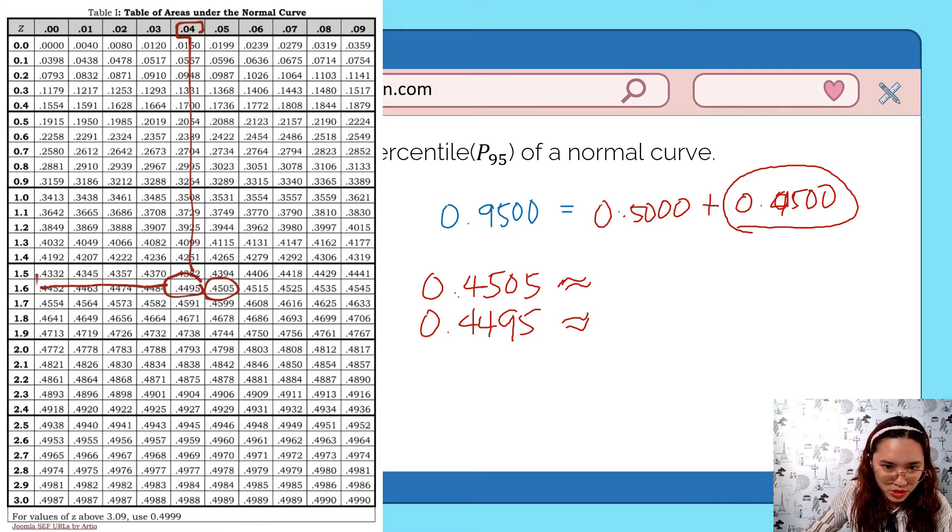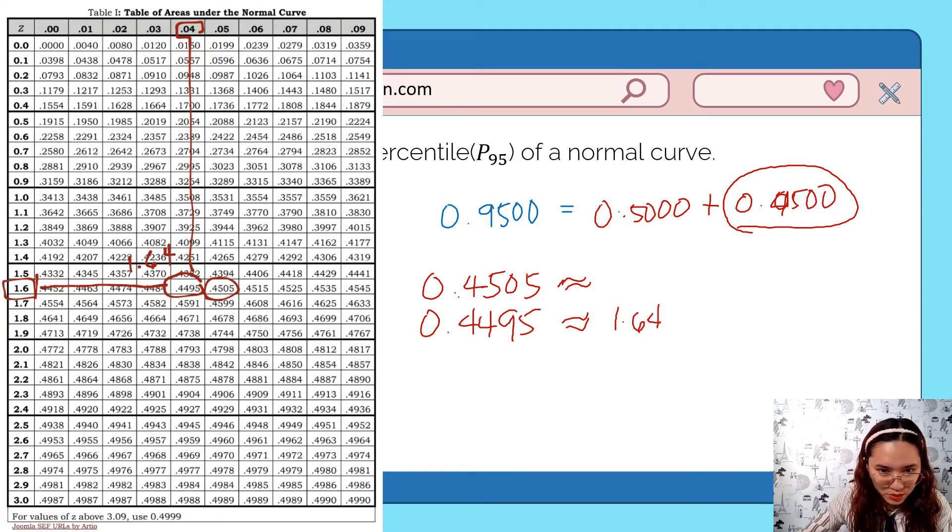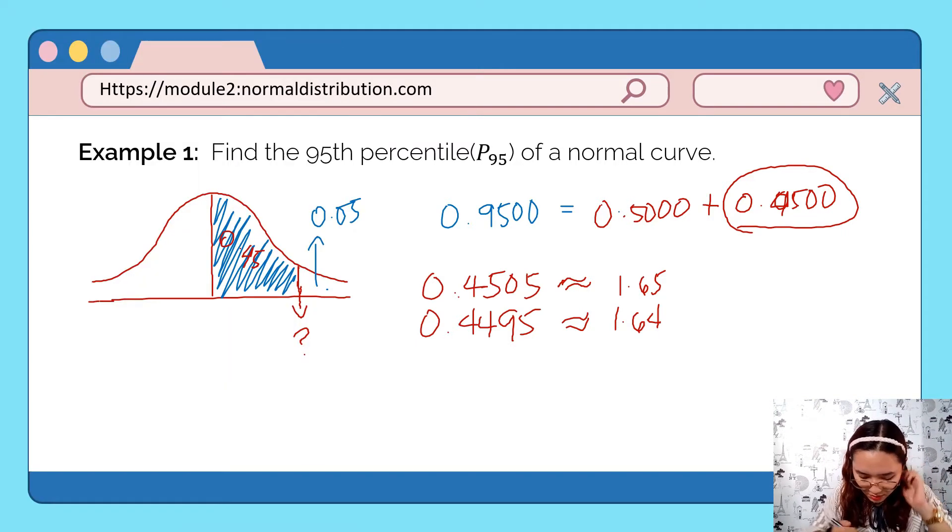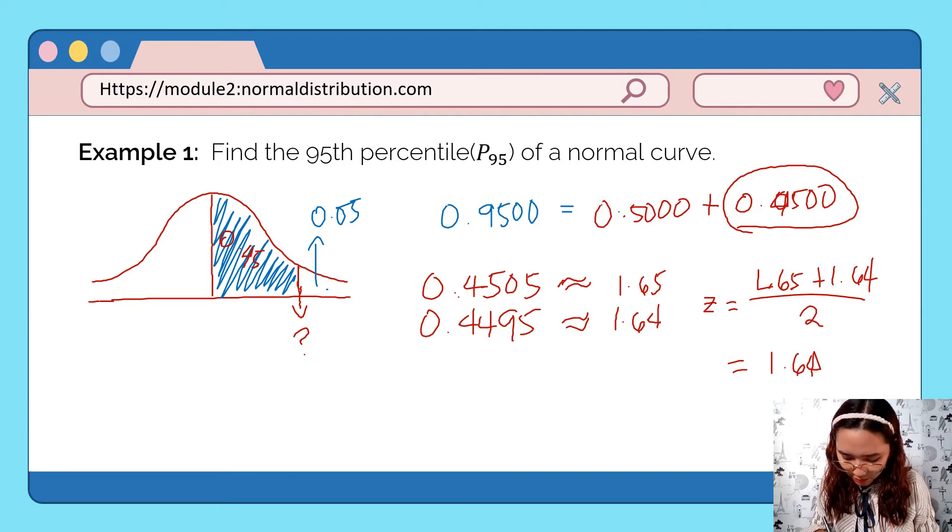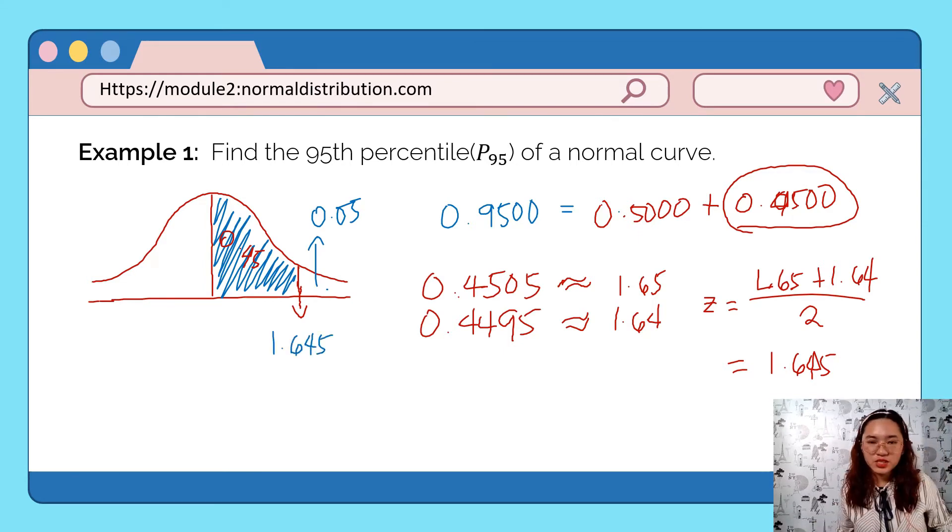0.4495 corresponds to 1.6 and 0.04, that is 1.64. And 0.4505 is 1.6 and 0.05, that is 1.65. Since they're both nearest to 0.45, let's take the average of these two. So the z we're looking for is 1.65 plus 1.64 over 2, which equals 1.645. So 1.645 is the 95th percentile of a normal curve.